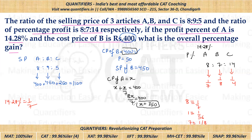Now let's find the cost price of C. Let cost price of C = y. Profit percentage of C is 1/4, so y + y/4 = 5y/4 = selling price of C = ₹250. Therefore y = 250 × 4/5 = ₹200. So cost price of C is ₹200.